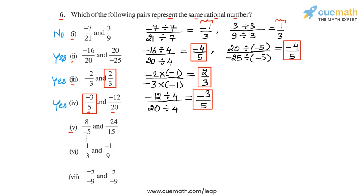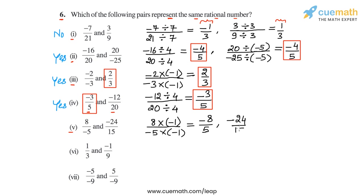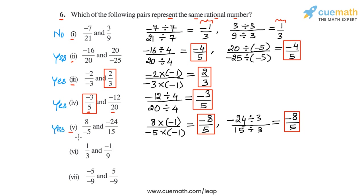In part 5, we have 8/-5 and -24/15. For 8/-5, the HCF of 8 and 5 is 1, so we multiply by -1 to make the denominator positive, giving -8/5. For -24/15, the HCF of 24 and 15 is 3, so dividing by 3 gives -8/5. Both standard forms are -8/5, so this pair represents the same rational number. The answer is yes for part 5.